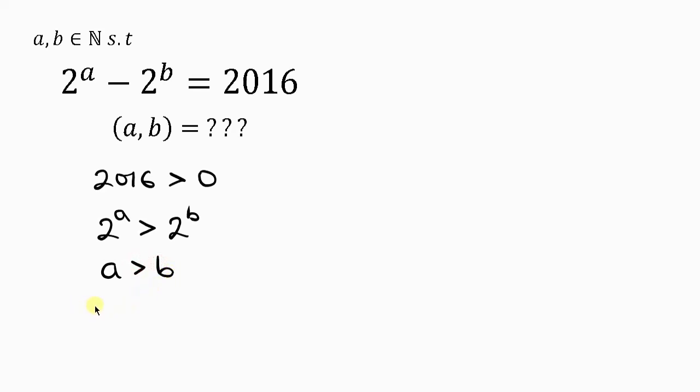That means we can write a to be equal to b plus k, where k is also a positive integer. Let's substitute b plus k for a in the original equation. So 2^(b+k) - 2^b = 2016.